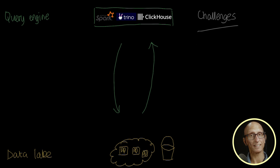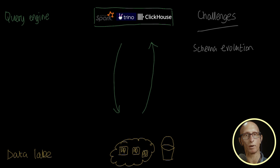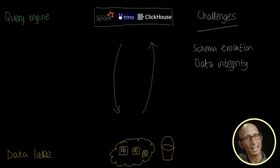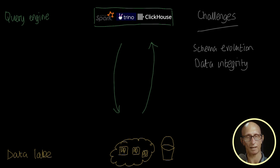The first challenge is schema evolution — our queries might break if we add, remove, or change the data type of fields in new Parquet files. The second is data integrity: our data can get corrupted or left in inconsistent states when multiple processors try to read and write Parquet files at the same time.